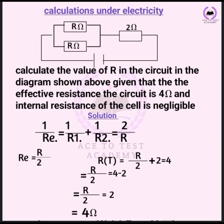So we have one over R plus one over R which gives two over R. Setting two over R equal to the effective resistance of 4, solving: R = 2 ÷ 4, wait — rearranging: R over 2 = 4, so R = 4. You can confirm by writing: one over four plus one over four equals two over four, which is one over two, and two plus two equals four.